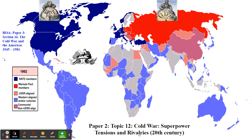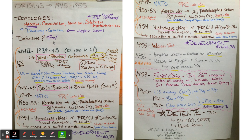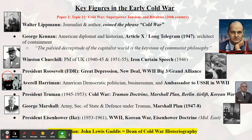Jumping ahead to Paper 2 Topic 12, Cold War, Superpower Tensions and Rivalries. This overlaps with your Paper 3 Section 16, Cold War and the Americas, 1945 to 1981. We spent a lot of time in late fall and early winter looking at key figures in the early Cold War. We read Walter Lippmann's piece where he coined the phrase 'Cold War' before World War II was even over. We read excerpts of George Kennan's Long Telegram — Article X — in which he postulated that the 'palsied decrepitude of the capitalist world is the keystone of communist philosophy,' meaning we have to keep the U.S. going to prevent communists from taking over. You worked with Churchill's Iron Curtain speech and Stalin's response as published in Pravda — remember Churchill was not prime minister at the time and was speaking in Fulton, Missouri.